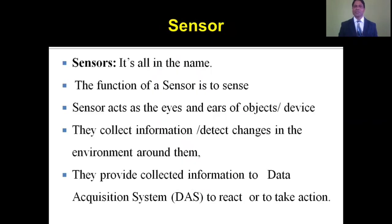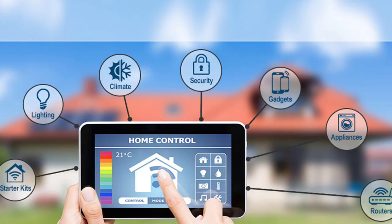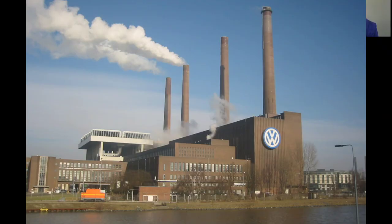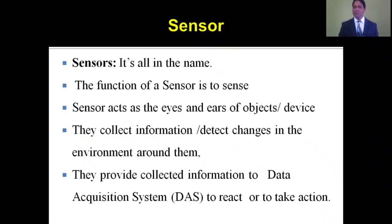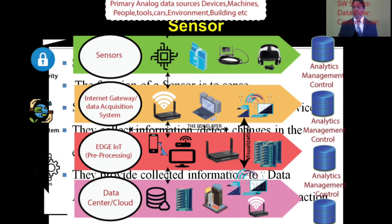It's all in the name. The function of a sensor is to sense its environment. Sensors act as the eyes and ears of objects or devices. They collect information or detect changes in the environment around them, and provide that collected information to a data acquisition system to react or to take action.